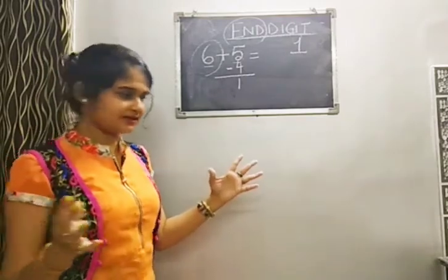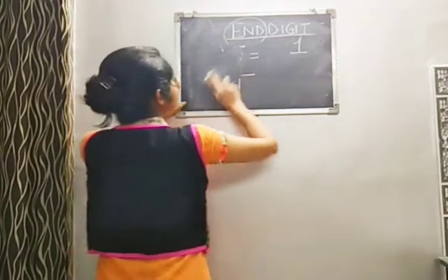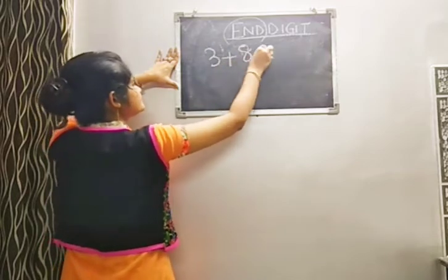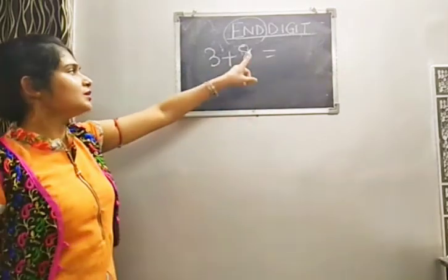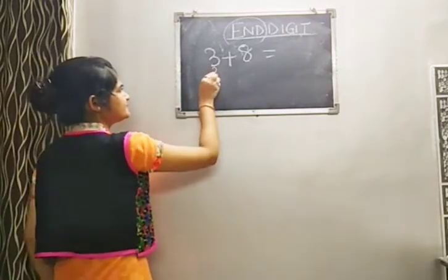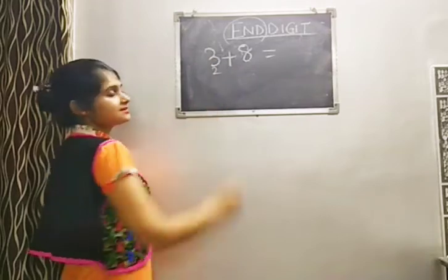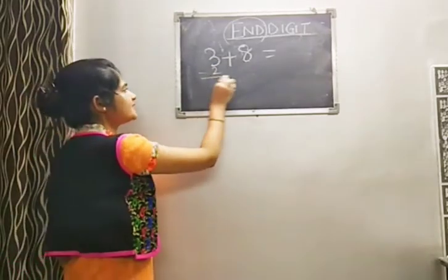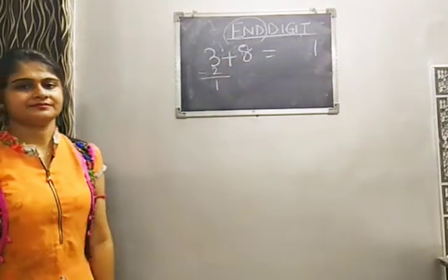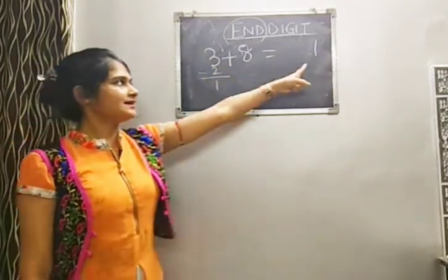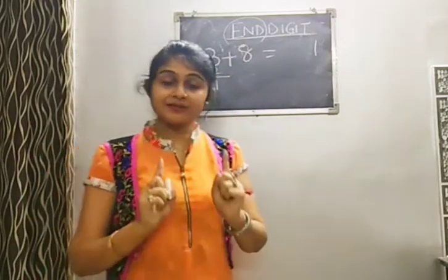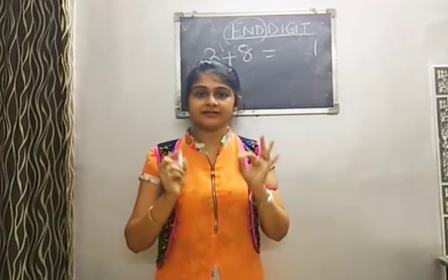Whatever number I give you — say 3 plus 8. 8 is the highest number, 3 is the lowest. What is the complement of 8? It is 2. Subtract: 3 minus 2 equals 1. You write end digit 1. Cross check: 8, 9, 10, 11 — yes, 11, end digit is 1. Keep in mind, children: this is the first starting of Vedic Math. Here you get confused between question pattern and end digit. Whenever this question comes, end digit means you write only the last part.